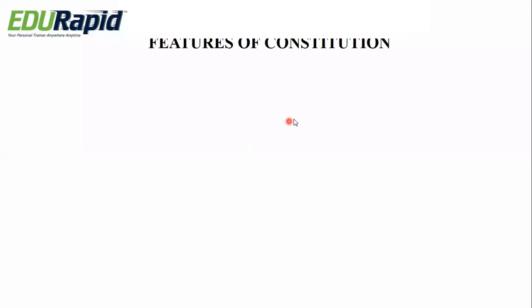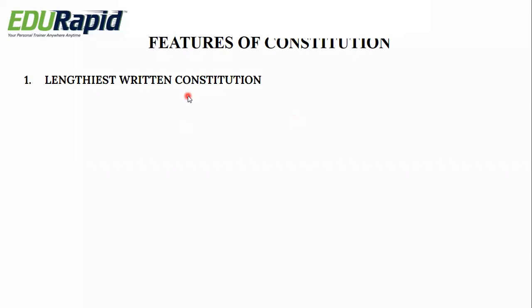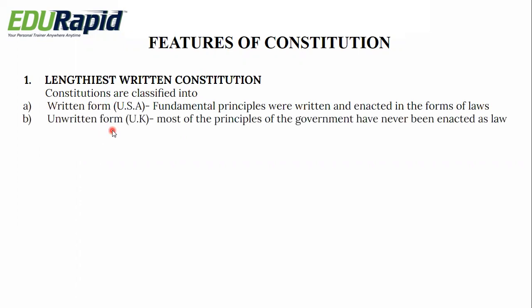Now the features/characteristics of the present constitution. First, it is the lengthiest written constitution. Constitutions are classified into two types: written form and unwritten form. Written constitutions, like India and USA, have fundamental principles written and enacted in the form of law. The best example for unwritten constitution is the UK, where most principles of government have never been enacted as law — it doesn't mean nothing is written, but most principles are not enacted as law. The Indian constitution is the lengthiest written constitution in the whole world.